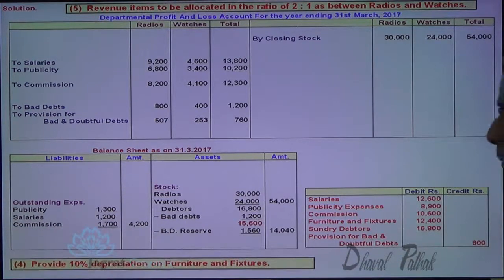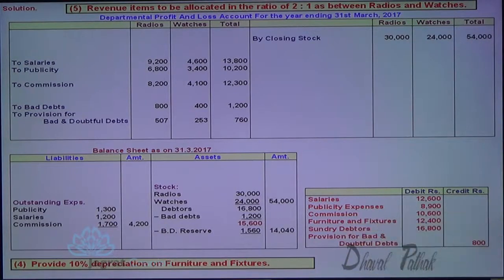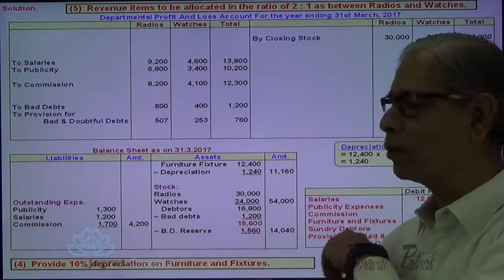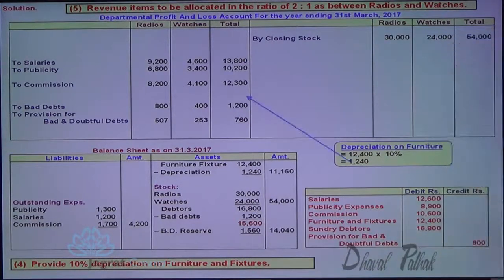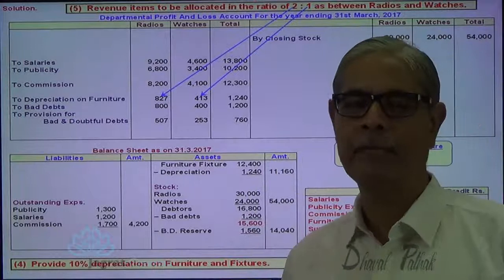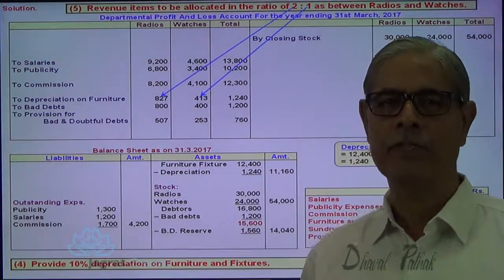Provide depreciation on furniture and fixtures at the rate of 10%. Depreciation amount is 1,430. This is deducted — net amount goes to the outer column, recorded in the total column and bifurcated in the ratio of 2 to 1. This is how bifurcation is made of depreciation on furniture.